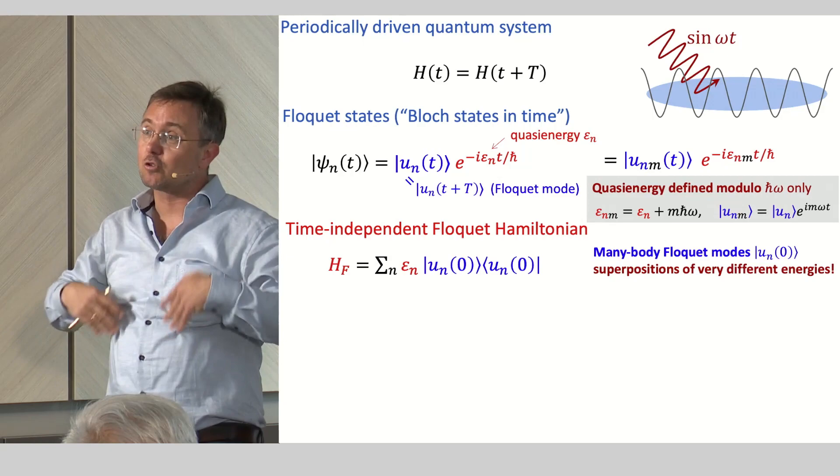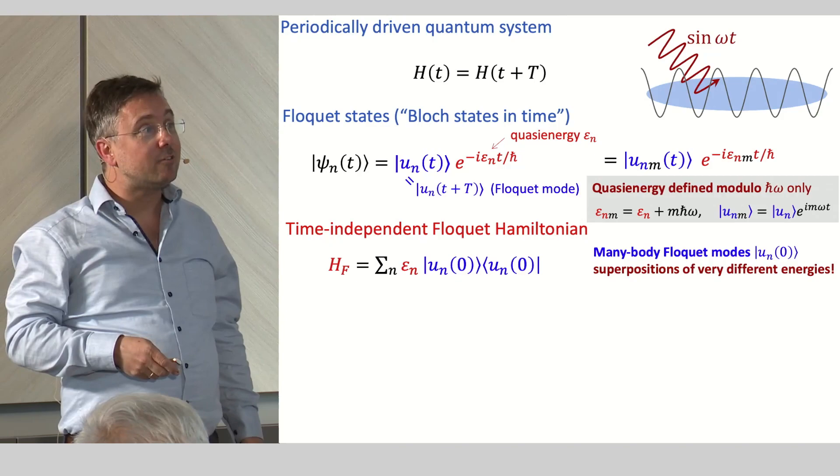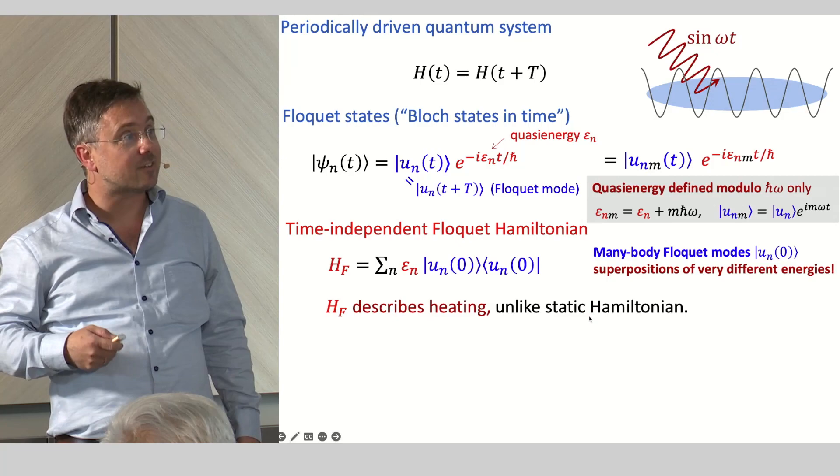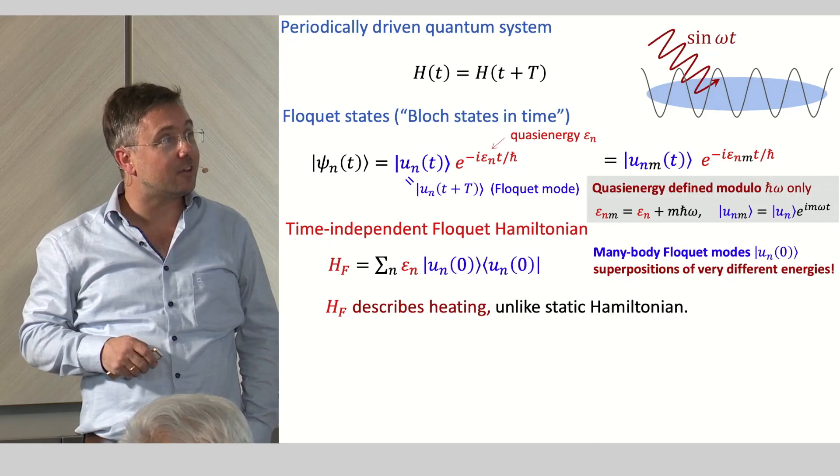As a consequence, these Floquet states are superpositions of states having very different energies. And these resonances, if we go to a many-body problem, are ubiquitous. That means these many-body Floquet states are actually superpositions of states having very different energy. As a consequence, this Floquet Hamiltonian actually describes heating, unlike static Hamiltonians. This is something which has been discussed a lot in the last years.